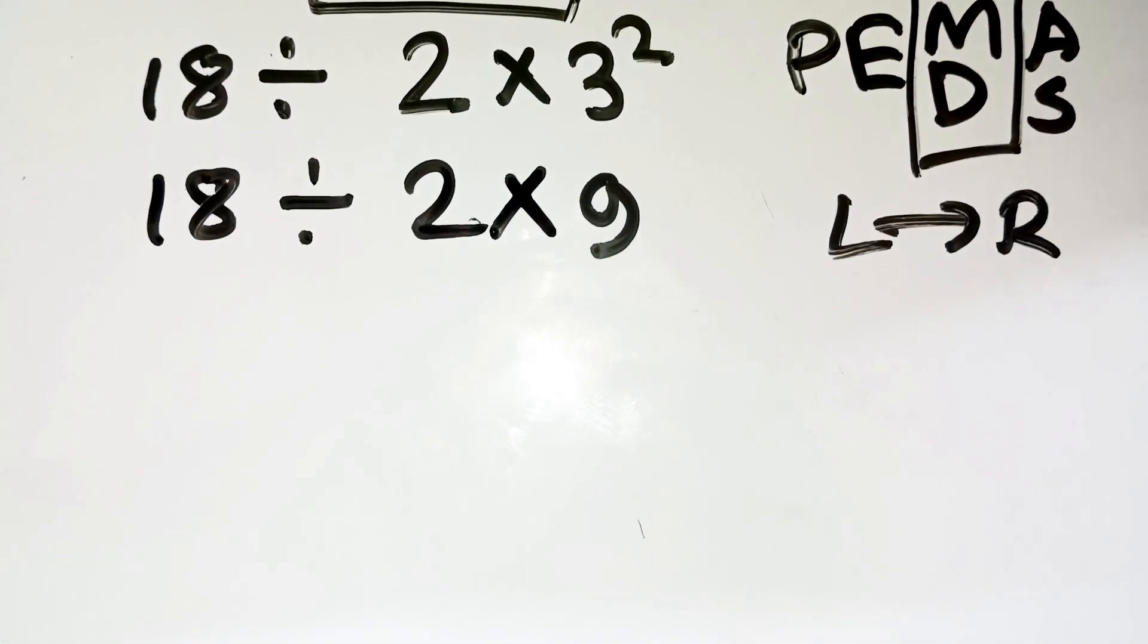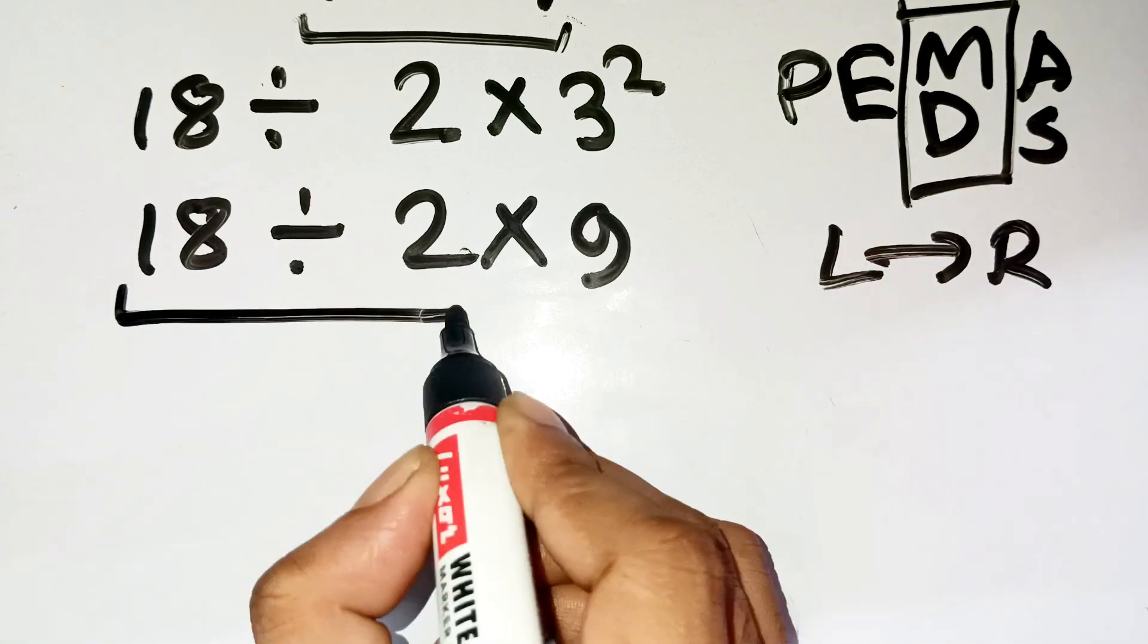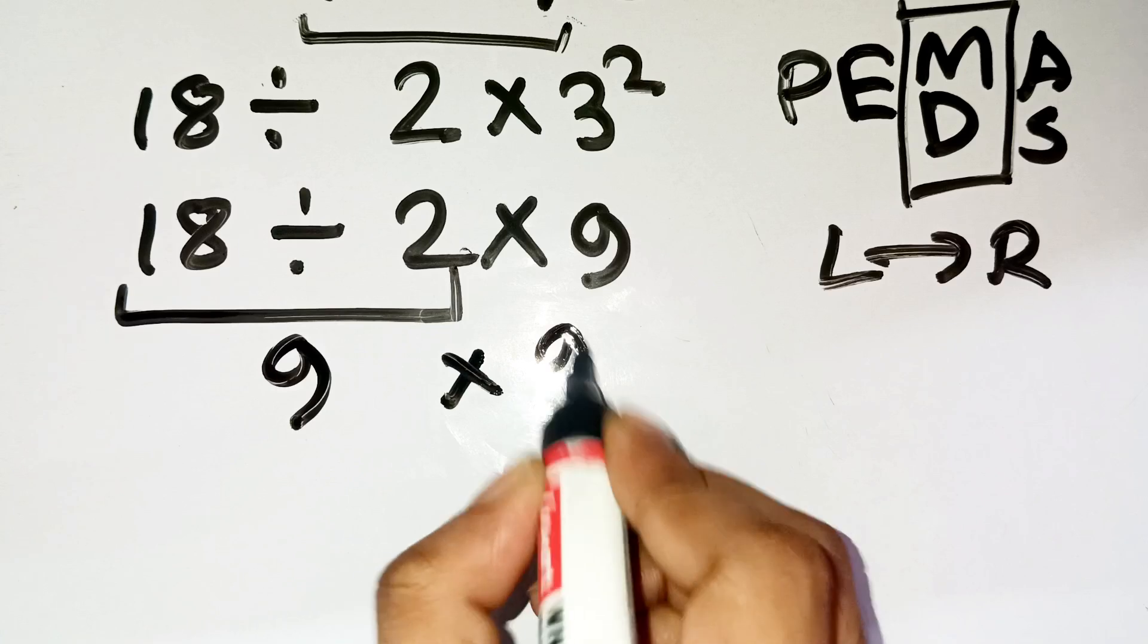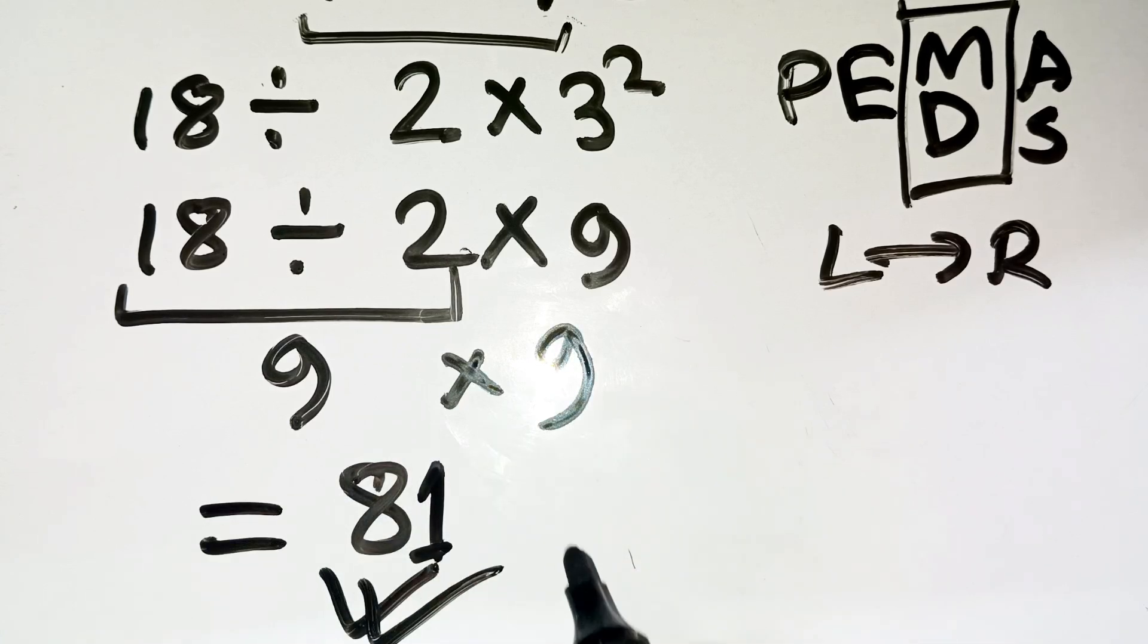Here's the key. We do these operations from left to right. So first, 18 divided by 2 equals 9. Then, 9 times 9 equals 81. And that's it. The correct answer is 81, not 1.